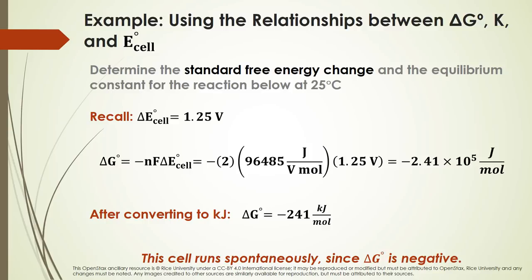Now let's calculate the free energy using delta G° = −nF·E°_cell. With 2 moles of electrons, Faraday's constant, and a cell potential of 1.25 V, we get −2.41 × 10⁵ joules per mole. The negative sign confirms a spontaneous reaction, consistent with our large K value. Converting to kilojoules: delta G° = −241 kJ/mol. The cell is spontaneous, delta G is negative, and K is very large, all consistent.